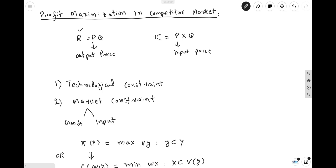And the cost of the firm is also equal to price times quantity. It should be noted that the P in revenue is the price of output — output price multiplied by the units of output gives you total revenue. And the P in cost is the price of input; input price times output units produced equals the total cost of the firm.